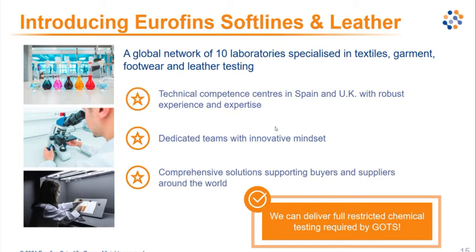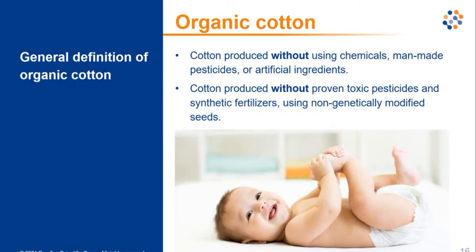We will now discuss organic cotton and chemical hazards. First, let's review the definition of organic cotton. It can be understood in two ways: cotton produced without using any chemicals, man-made pesticides, or artificial ingredients; or cotton produced without proven toxic pesticides or synthetic fertilizers, using non-genetically modified seeds — as Francesco has been explaining.